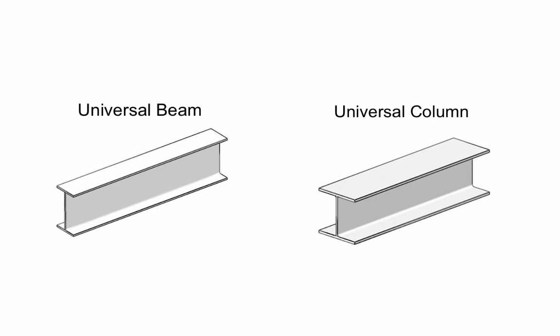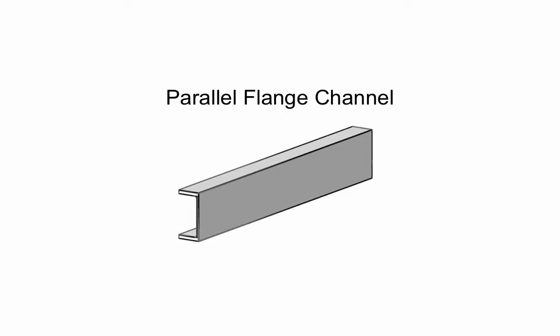Universal beams and universal columns both have a distinctive I shape, but while the depth and width are very similar in universal columns, the depth is always noticeably greater than the width in a universal beam. In contrast, parallel flange channels form a C shape.